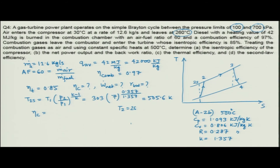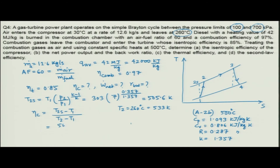Compressor isentropic efficiency = (T_2s - T_1) / (T_2 - T_1) = (505.6 - 303) / (533 - 303) = 88.1 percent. That is the first part of the problem.